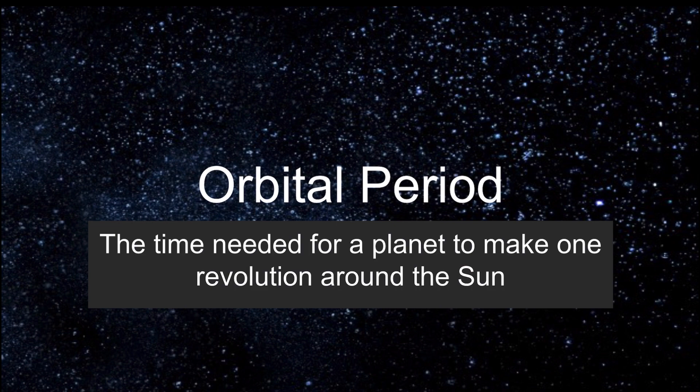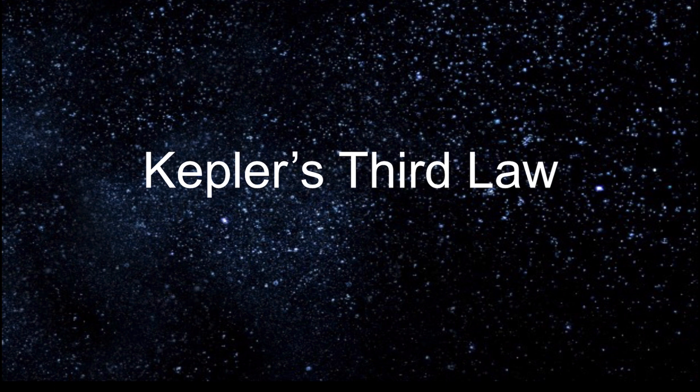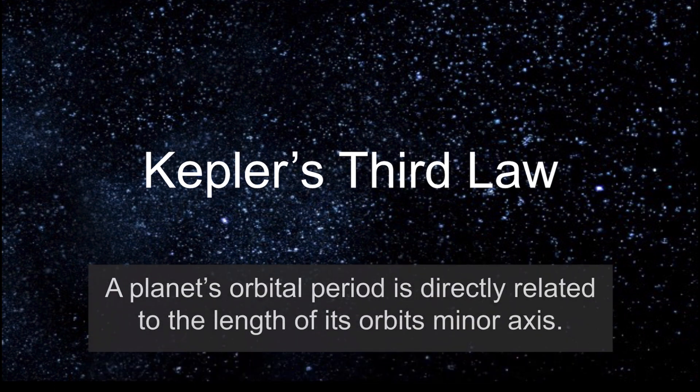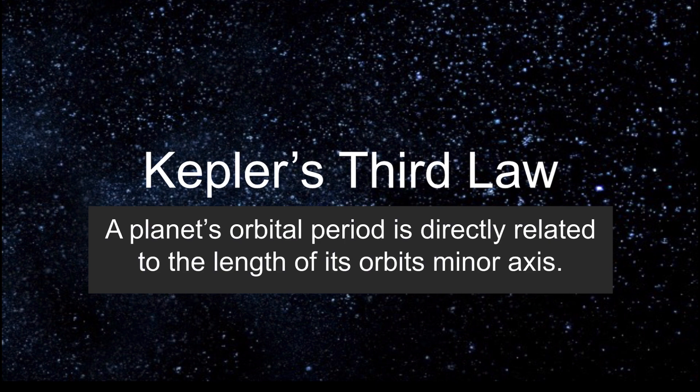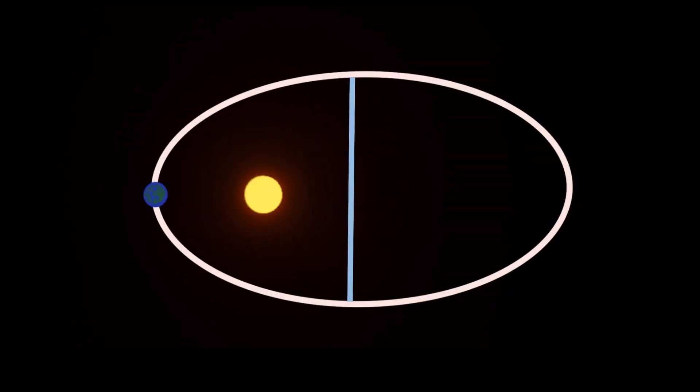Now that we have defined a planet's orbital period, we can learn that Kepler's third law of planetary motion states that a planet's orbital period is directly related to the length of its orbit's minor axis. If we remember that the shape of a planet's orbit forms an ellipse, we know that the minor axis is the length of the ellipse's shorter side.